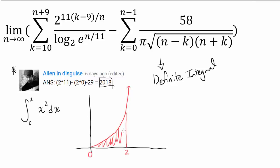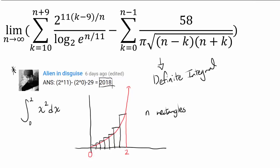Instead, let's try using the limit definition. We want to find the area underneath x squared from 0 to 2. One way is by dividing the interval from 0 to 2 into n subintervals, creating a bunch of rectangles. Since we have n rectangles dividing the interval of length 2, each rectangle has width 2 over n.